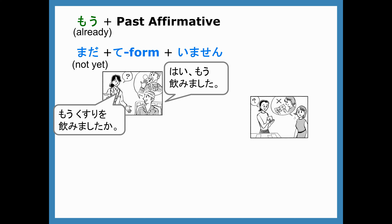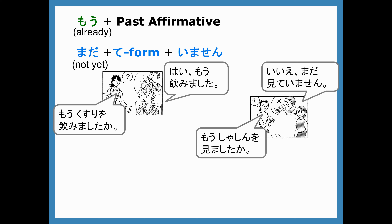We can use まだ plus the te-form plus imasen to talk about what we haven't done yet. So mo shashin wo mimashita ka — 'have you looked at the pictures already?' Iie, mada mite imasen tells us that we haven't looked at them yet. Be careful: when we use もう, we have to use it with the past tense affirmative — it has to be in the past tense. In other words, we want to use mashita or ta-form.